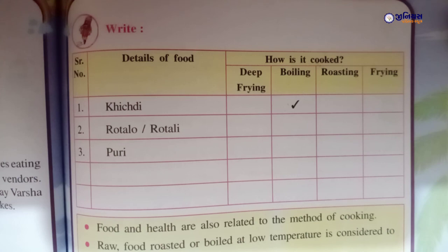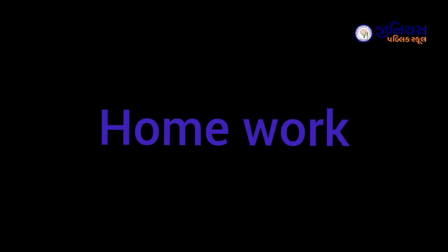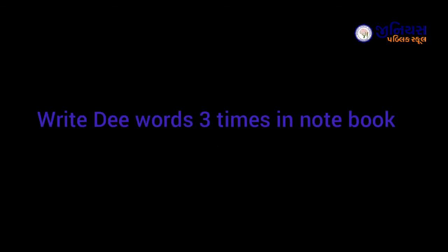Rotla and rotli are different in preparation method. Boiling, roasting, frying or deep frying — you should tick the correct option. What is cooked in the second one? Try to fill in how many foods are cooked and by which method. You should eat the cooked food and identify the preparation method.